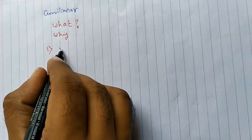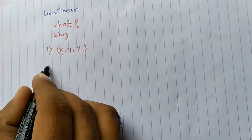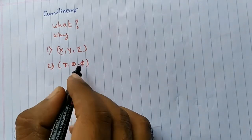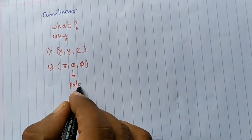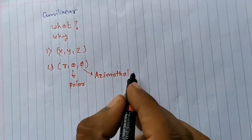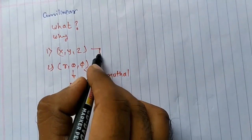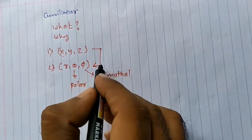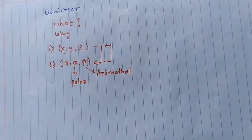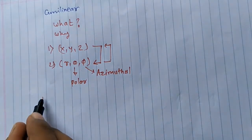The first is the Cartesian coordinate system whose coordinates are x, y, z. The second is the spherical polar coordinate system whose coordinates are r, theta, and phi — where theta is the polar angle and phi is the azimuthal angle. Then we saw the relationship between x, y, z and r, theta, phi, and also the transformation equations between the spherical polar and Cartesian coordinate systems. We also saw coordinate surfaces and coordinate lines.